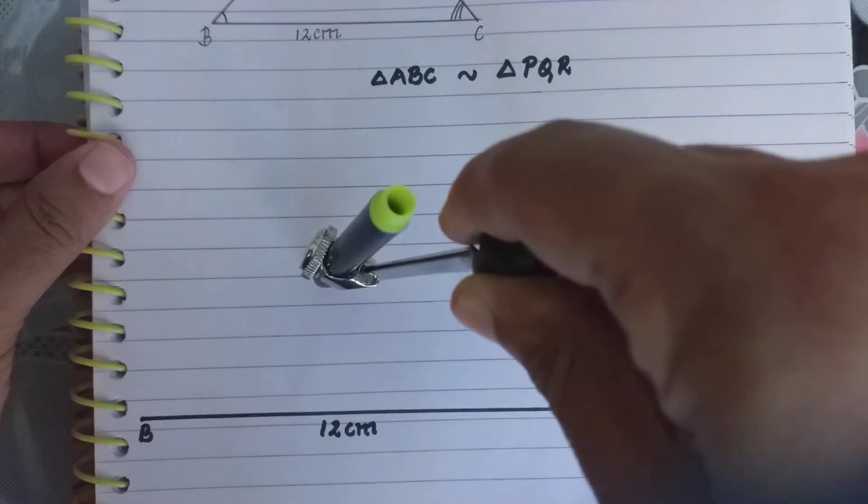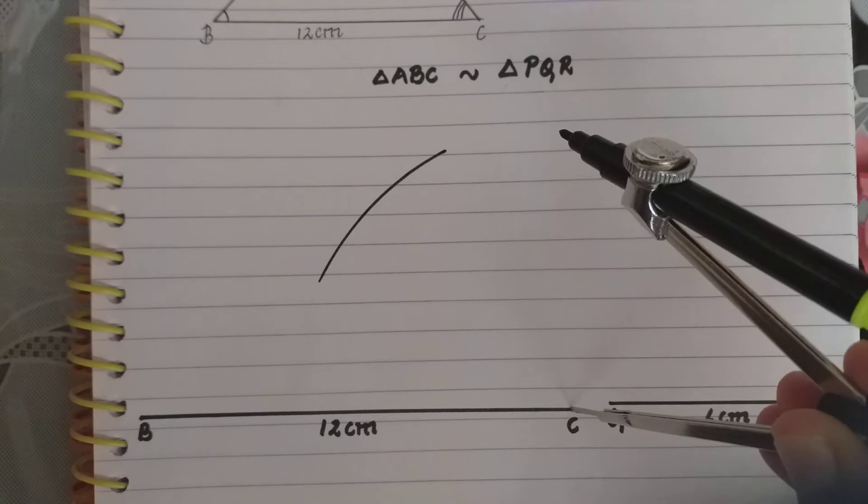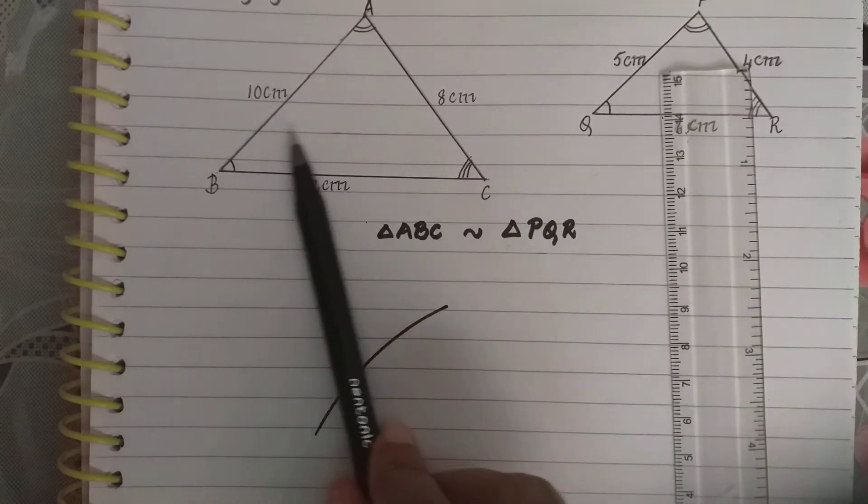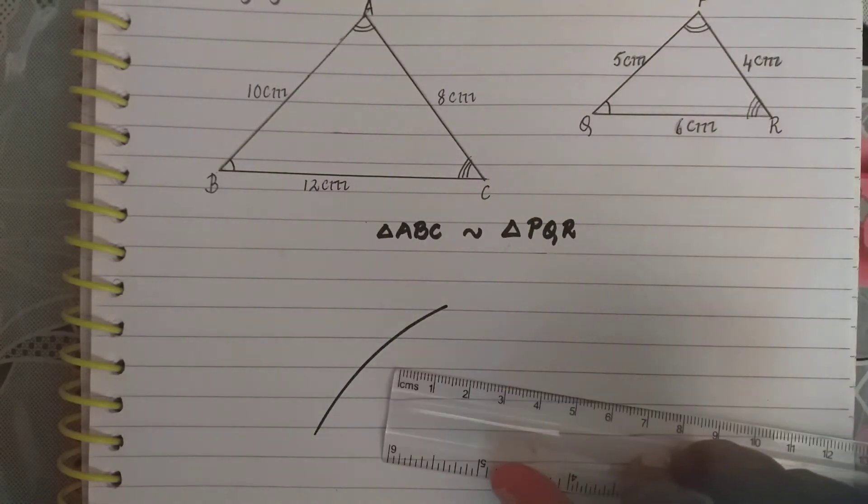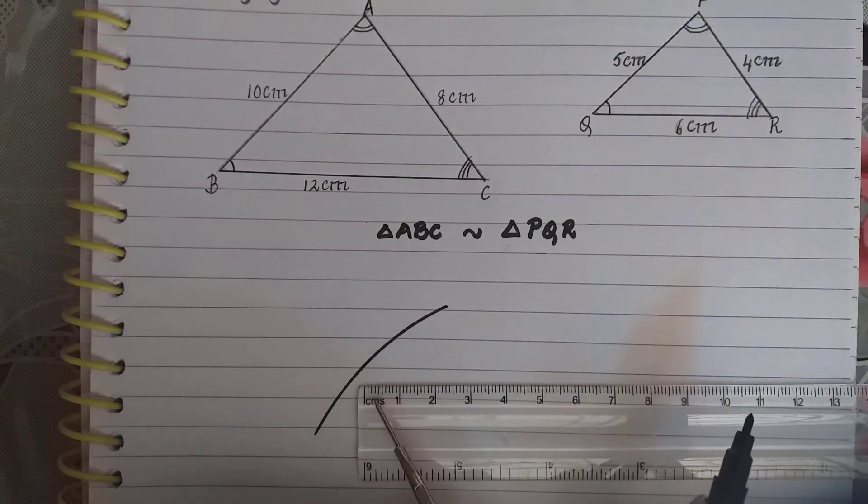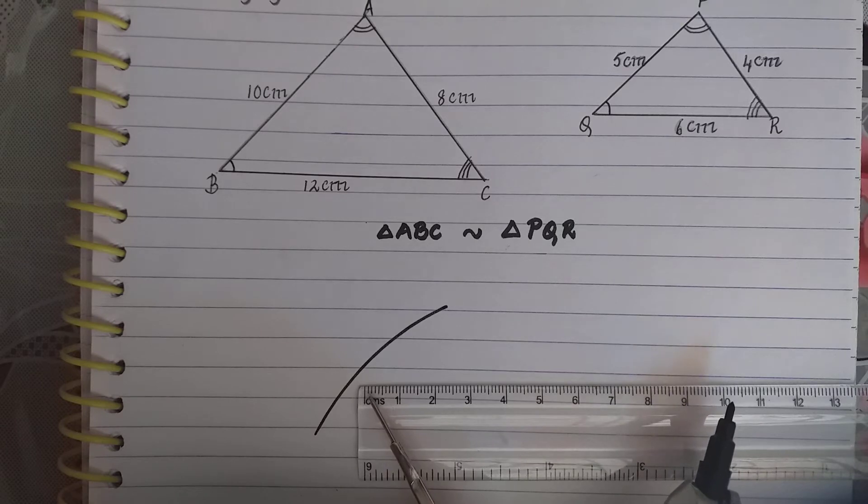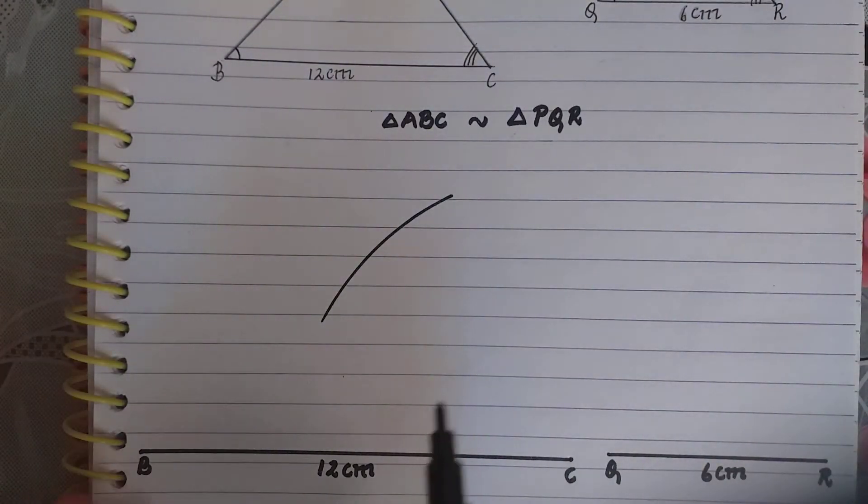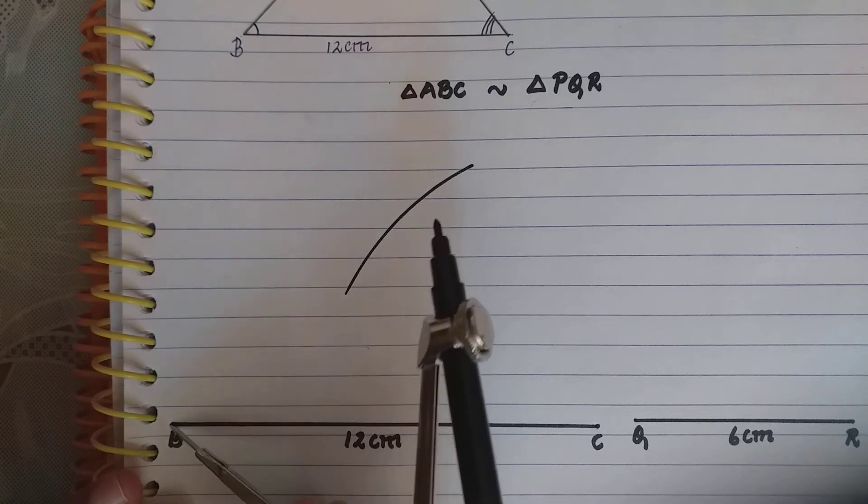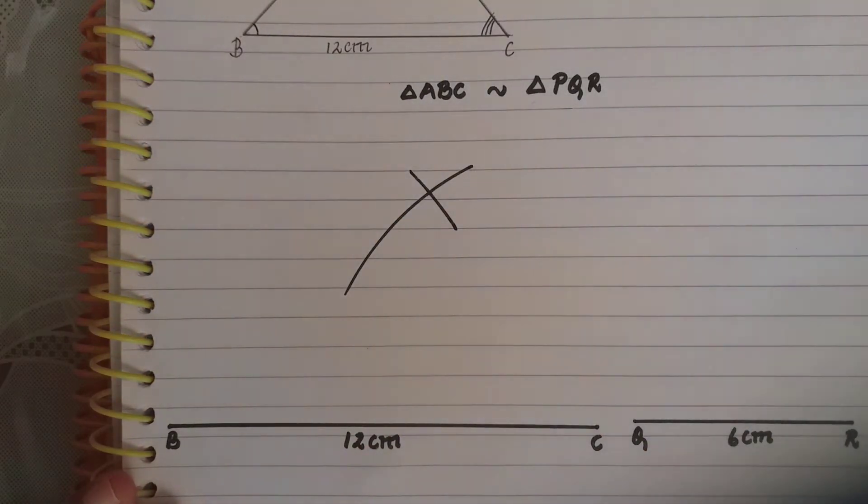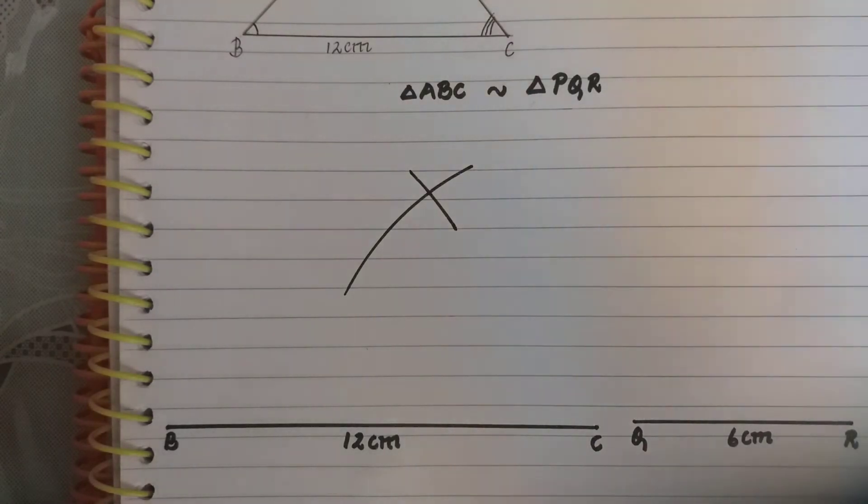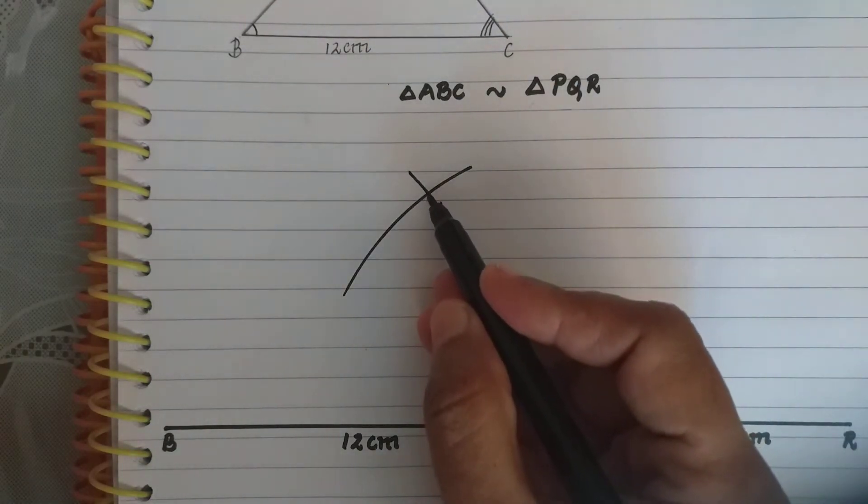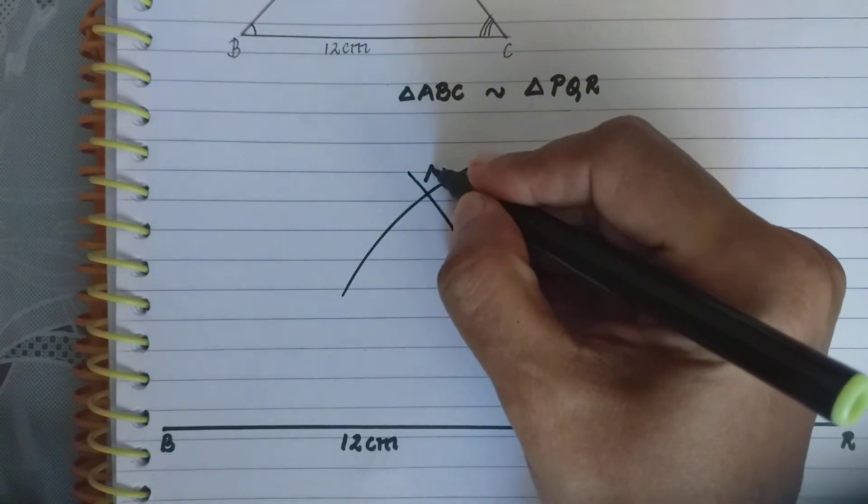I will draw an arc of 8 cm. Then on this side I have 10 cm. So I take the scale and measure 10 cm, and from point B I will cut this arc. I already have BC here. Now this point where the arcs meet will be point A.